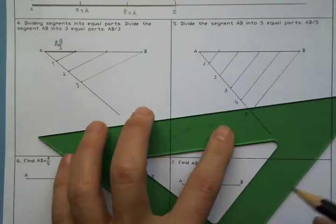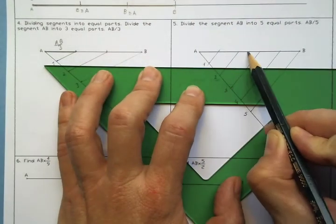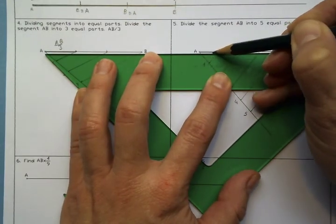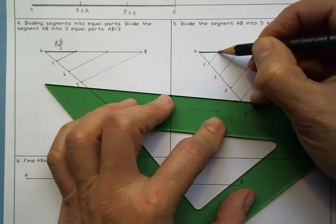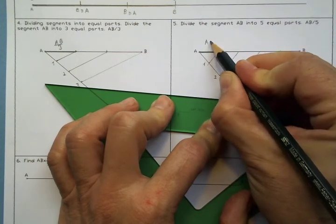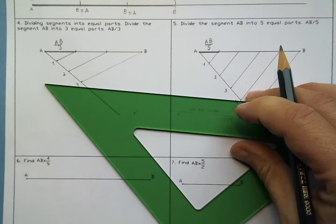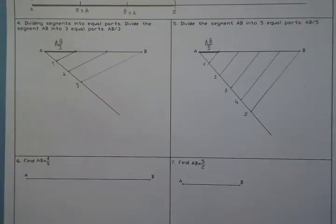Now, one, two, three, four, five. I'm going to highlight one of them. And this is going to be AB into five, or we can say one-fifth. And here, one-third.